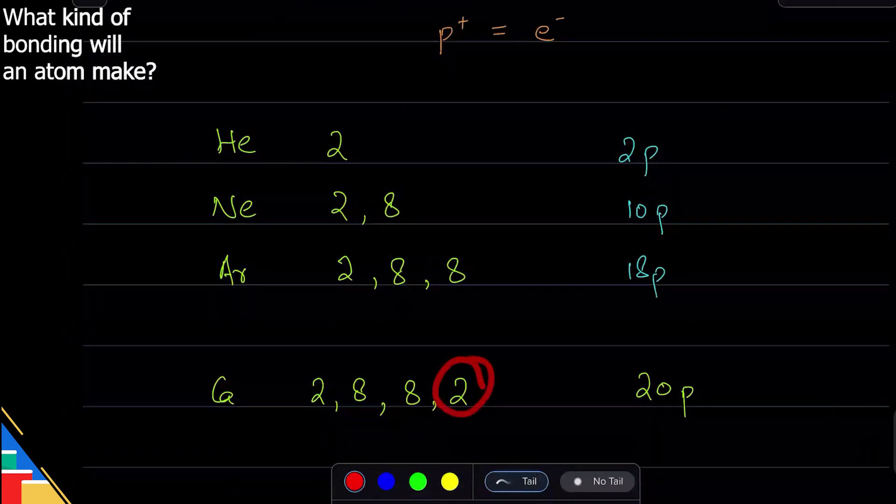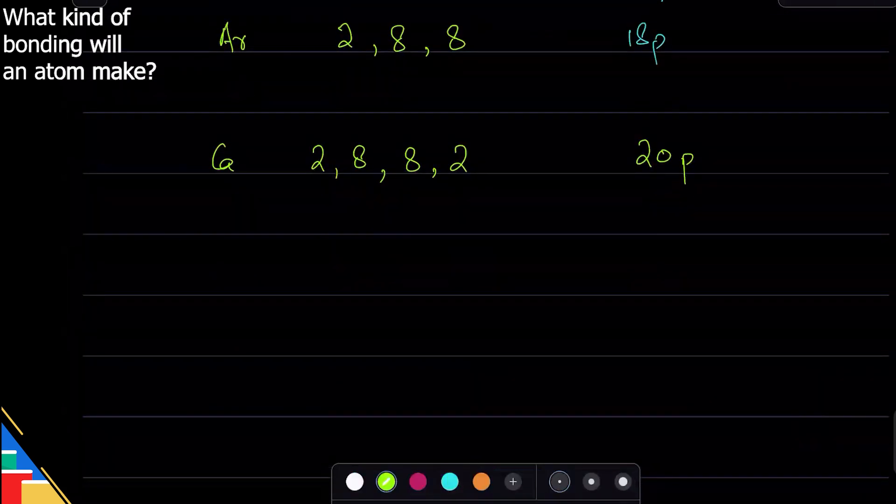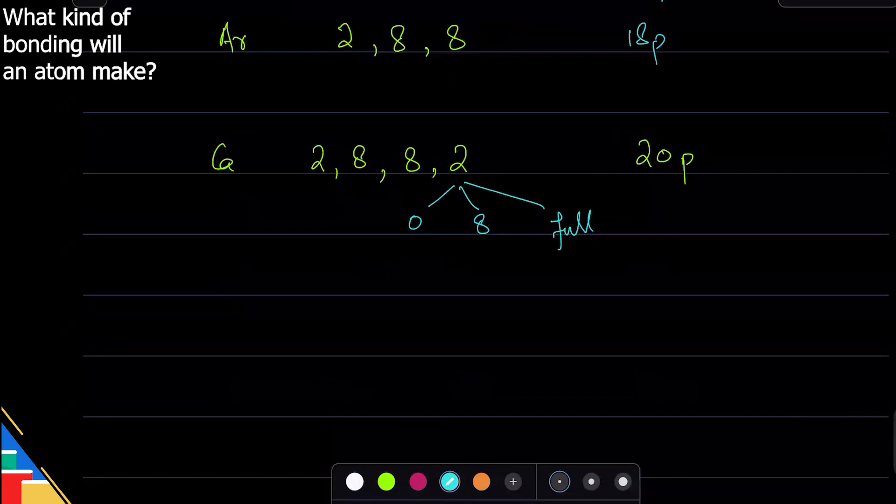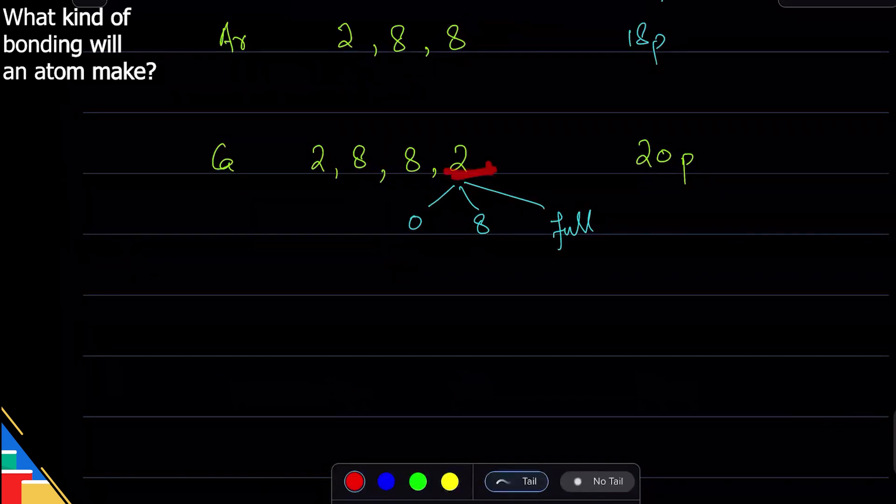It will try to do something here so that it can either become zero or 8 or full, and that's what all atoms do. If their last shell has not one of these, it will try to bond. That's what they do.